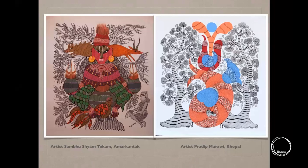On the left is how Kali and her various versions, or Parvati's various versions, or different variations of Shakti are depicted. Artist Shambhu Tekram ji has showcased how he looks at Parvati — or the Kali version of Parvati — from the perspective of Gond culture and heritage. On the right is a painting from artist Pradeep Maravi ji, also a very well-renowned artist with a slightly different style.